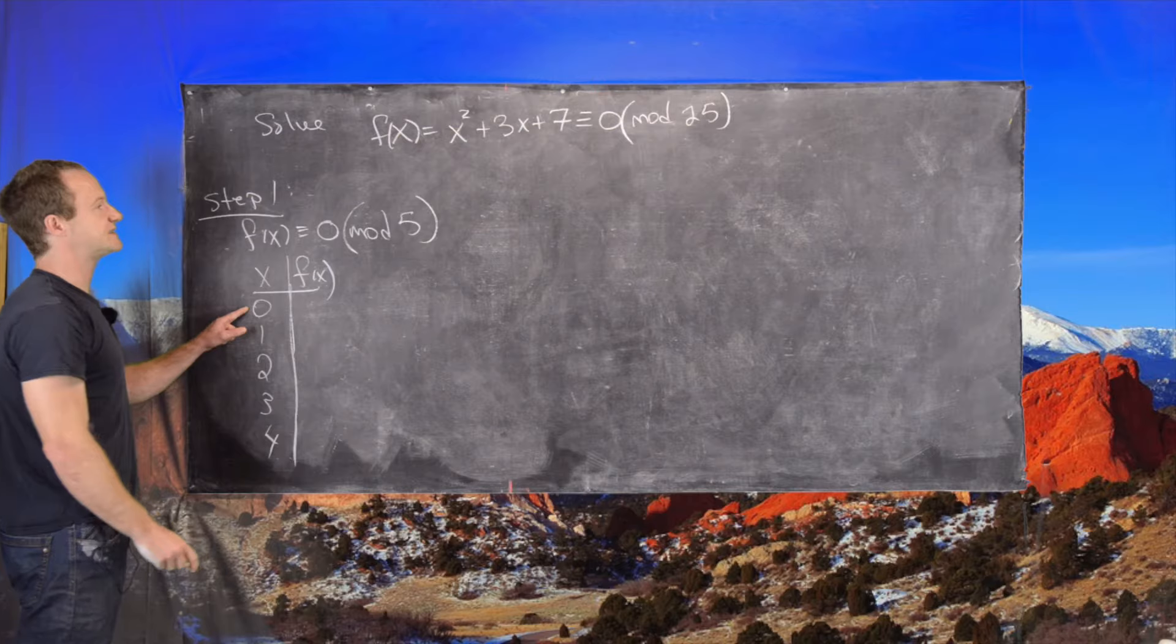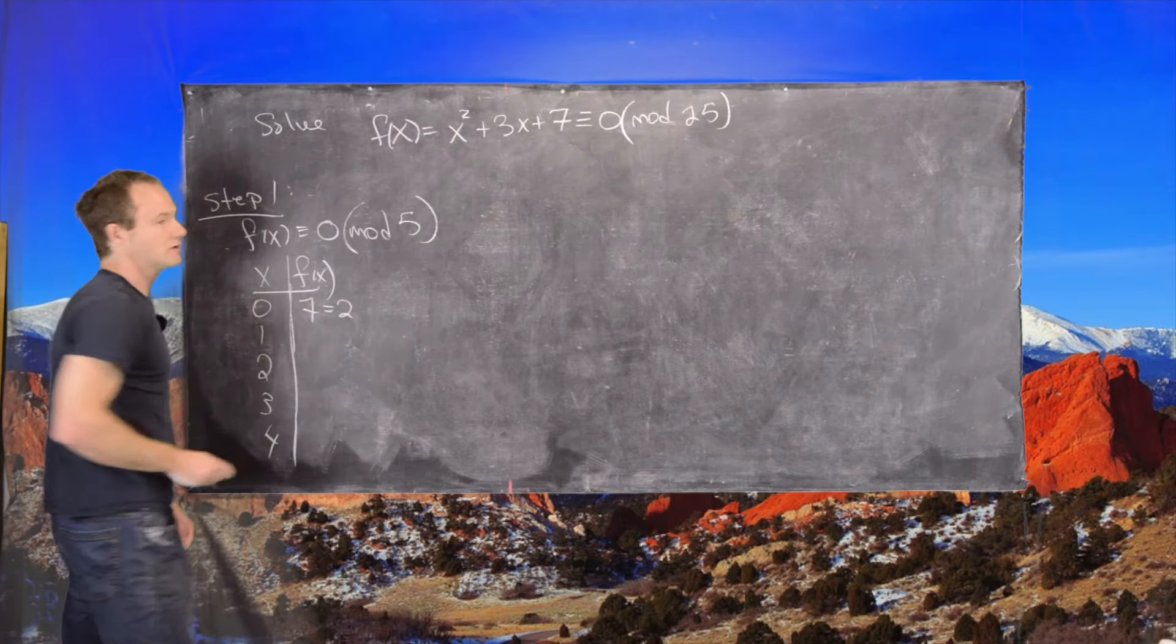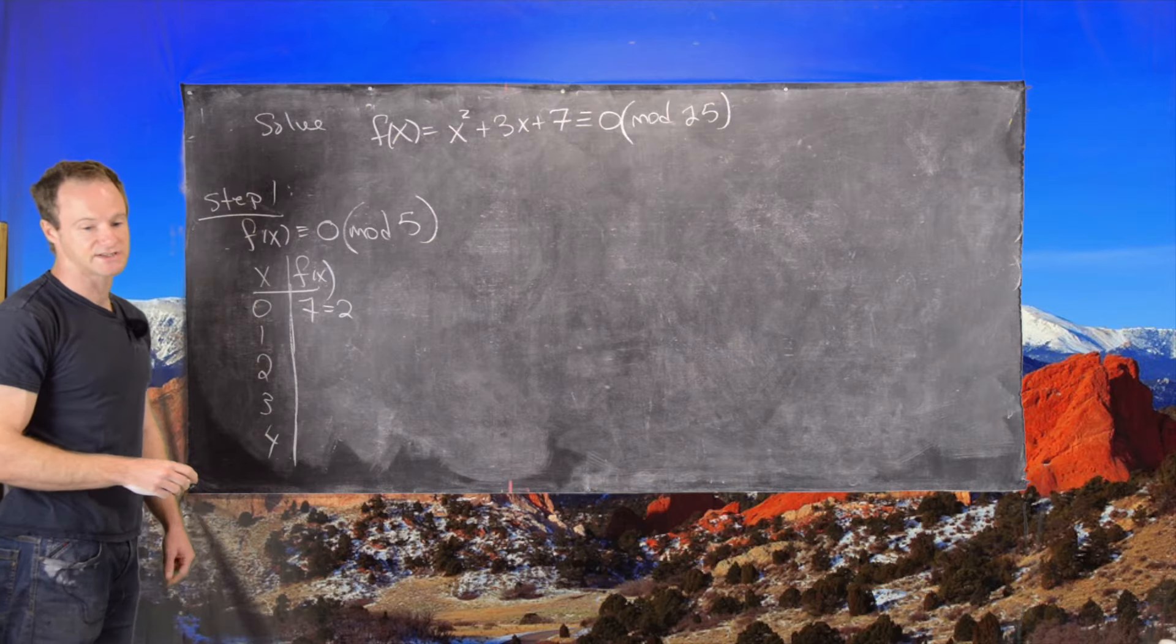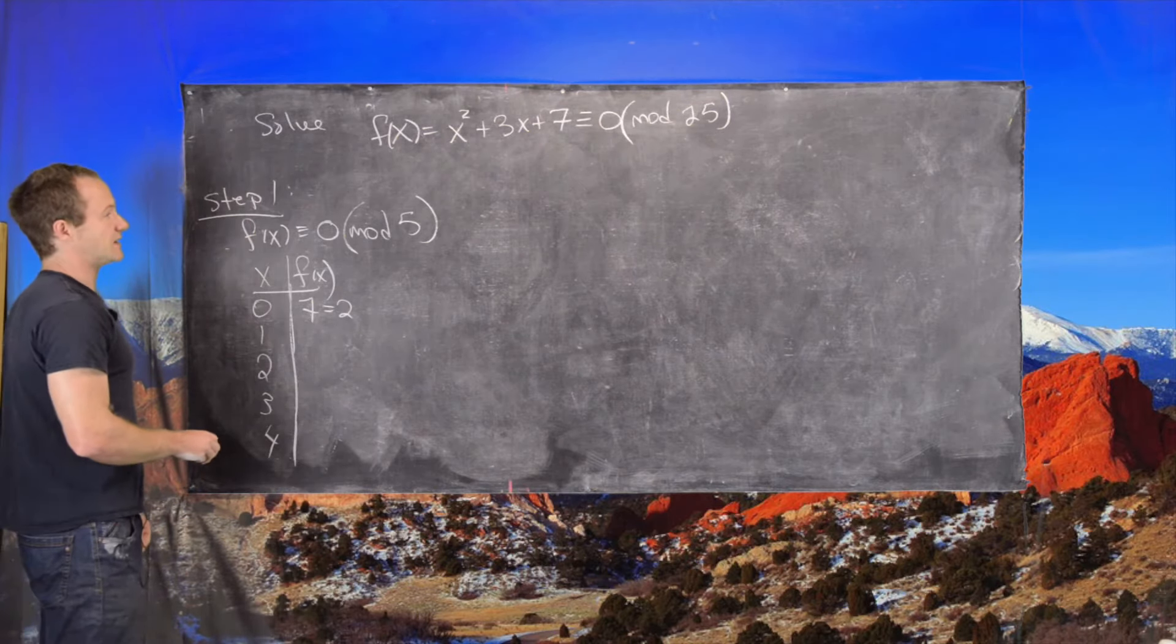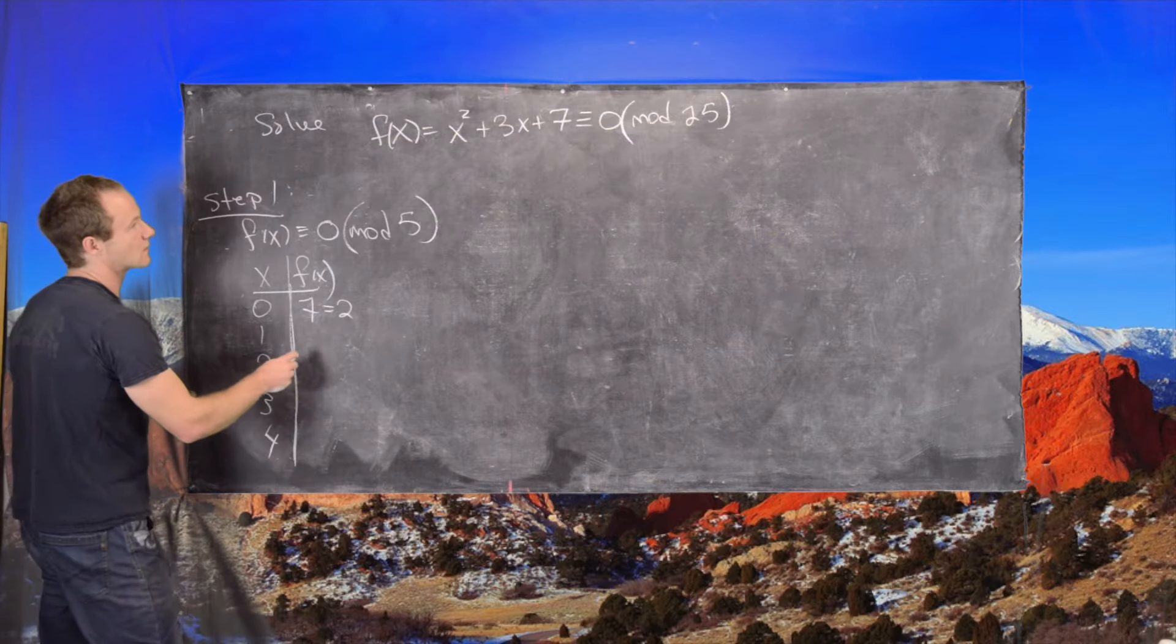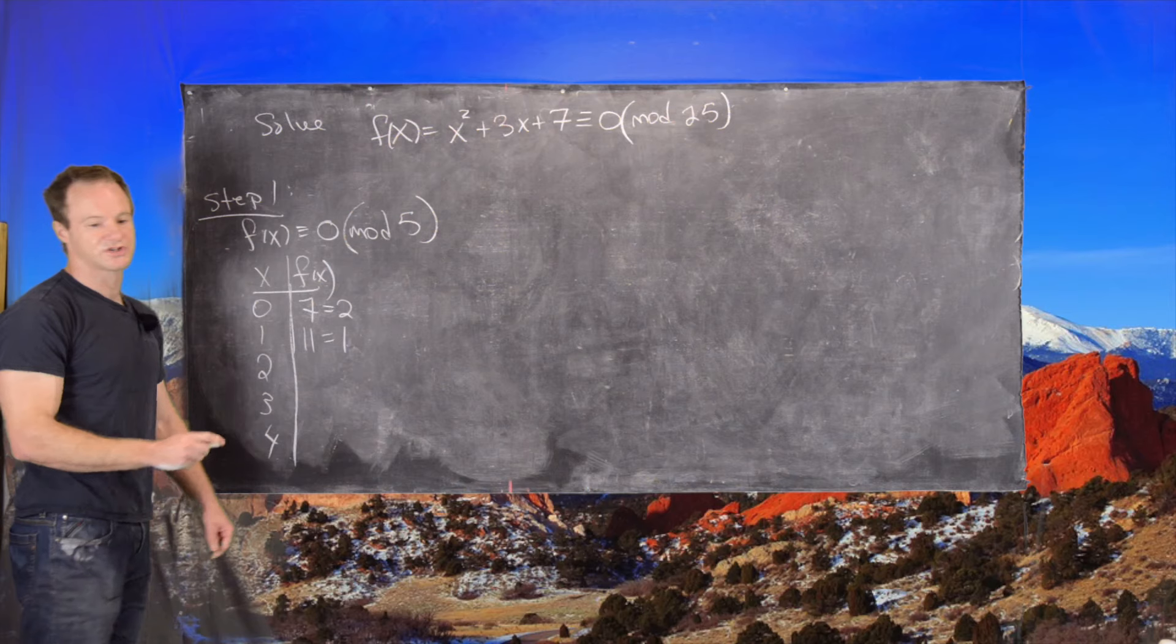And we notice that if we plug in 0, we'll get 7, which is equal to 2 mod 5, so that's not equal to 0. If we plug in 1, we'll get 11, which is 1, which is not 0.